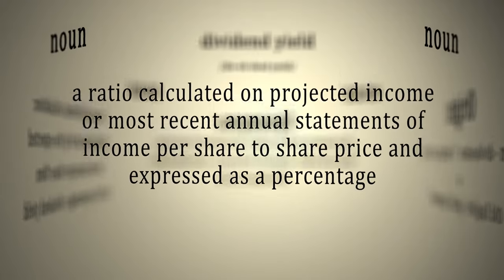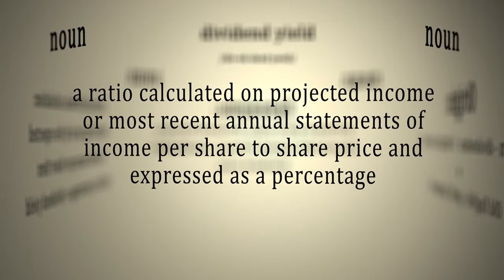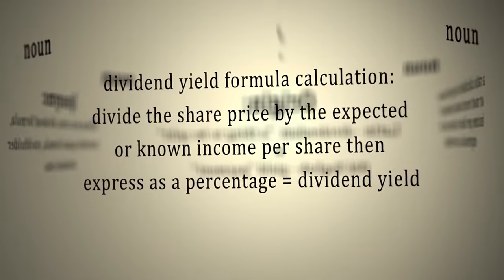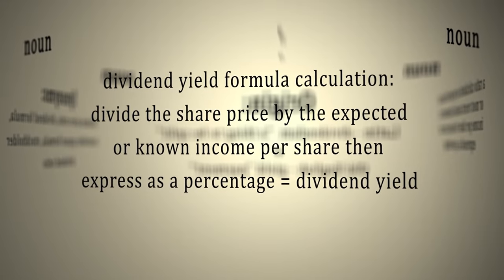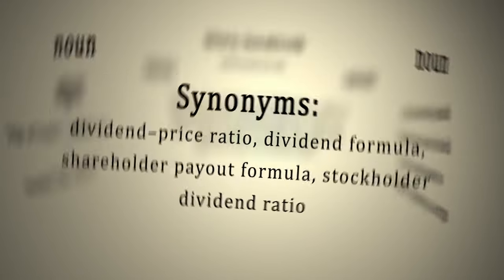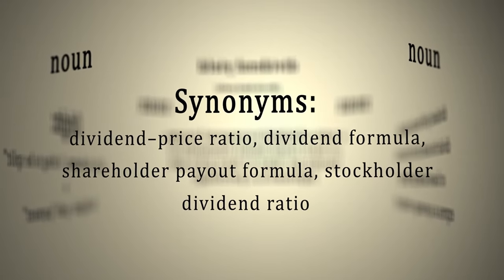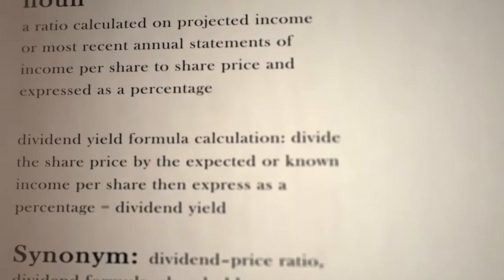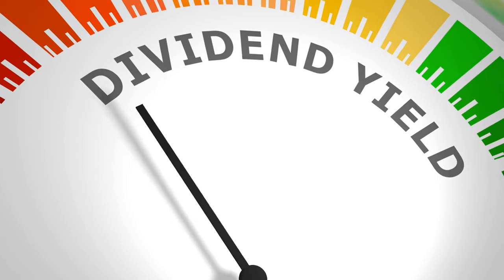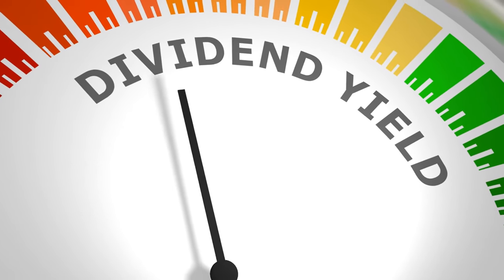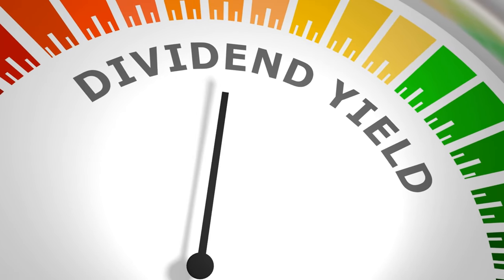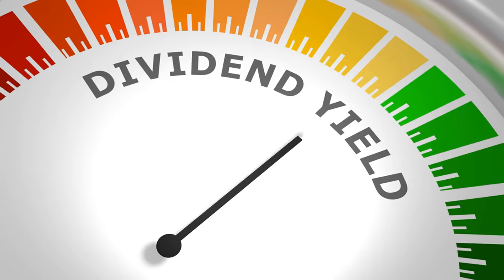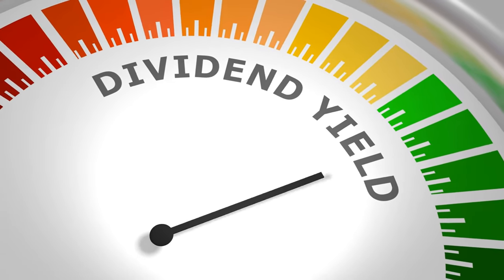First, focus on understanding dividend yields. Dividend yield is a financial ratio that shows how much a company pays out in dividends each year relative to its stock price. Simply put, it's the percentage of the stock price that you get back as dividends. Now, why is this important? Well, it helps you compare the relative attractiveness of different dividend-paying stocks.